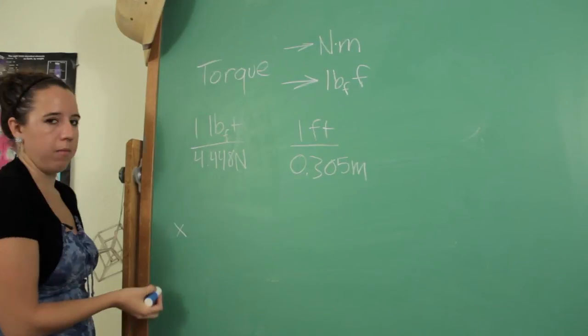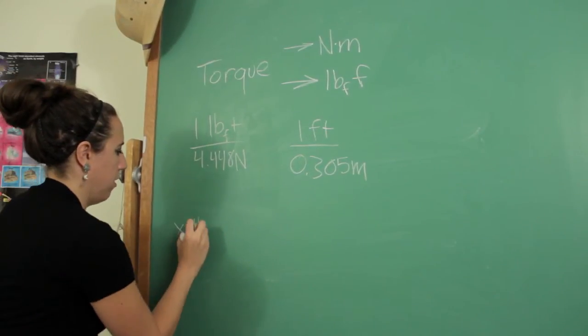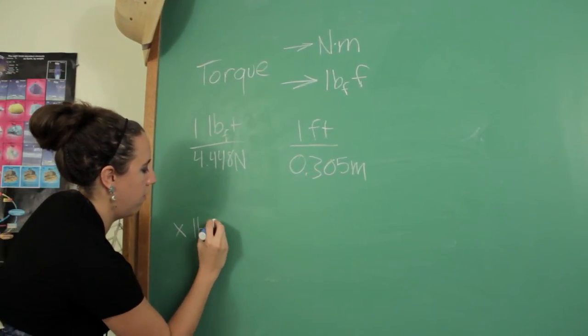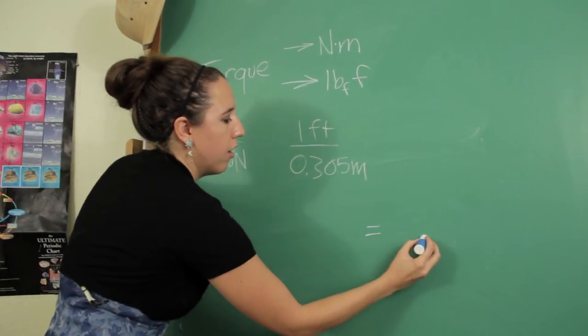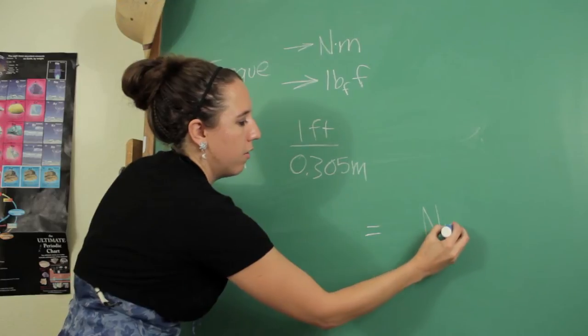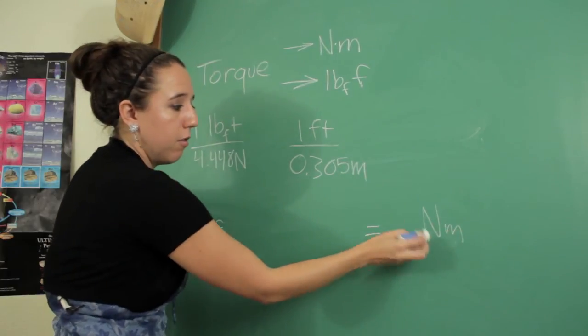So we'll just start with a number, get old x of foot-pounds that we need to convert and then we'll put our equal sign way over here and kind of remind ourselves that we want our final answer to be in newton meters.